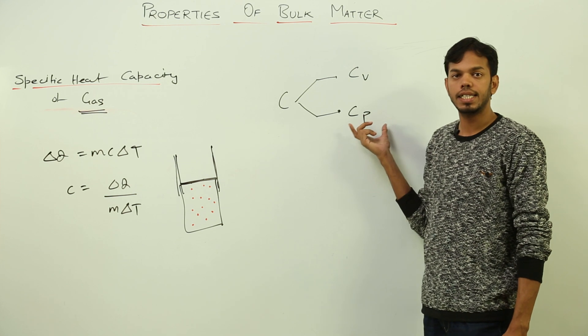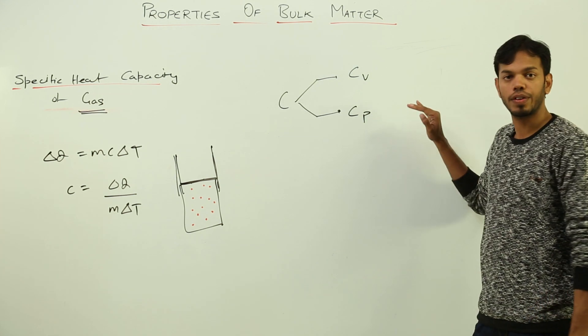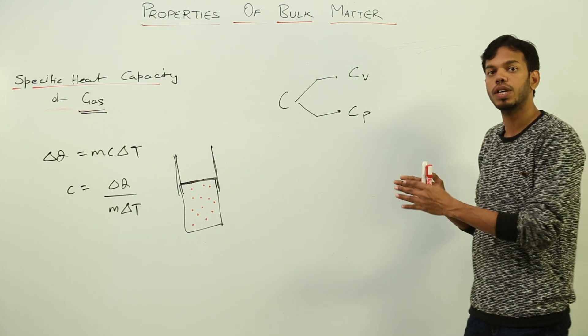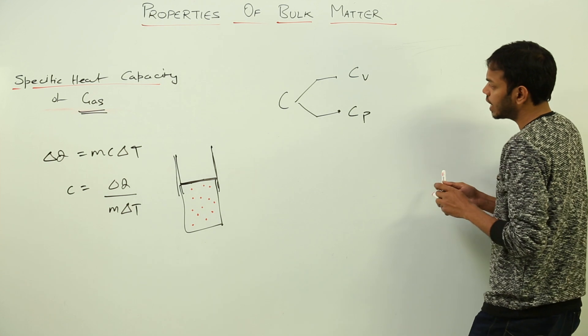And here, Cp is the amount of heat required to change the temperature of unit mass of gas by unit degree Celsius when the pressure of the gas remains constant.